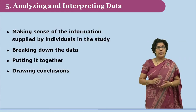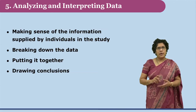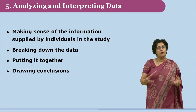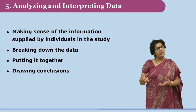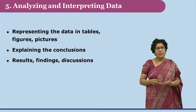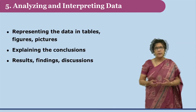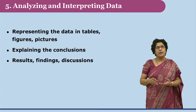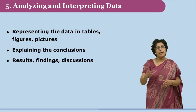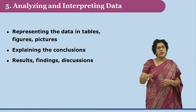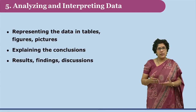The fifth step in conducting research is the analysis and interpretation of data. This is a very crucial stage where the researcher starts making meaning out of the collected data — breaking it down, putting it together, and drawing conclusions. Data is represented in the form of tables, graphs, or other figures. The researcher not only draws conclusions but also explains the rationale behind each observation or conclusion. The results are then discussed in terms of findings as well as recommendations for further researches.